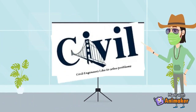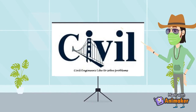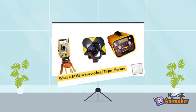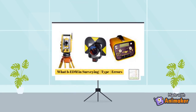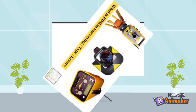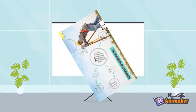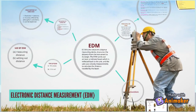Hey everyone, it's me Shiva and welcome to my channel Civil Problem Nepal. Today we will discuss about another instrument used in surveying: Electronic Distance Measurement. Electronic Distance Meter is surveying equipment used for measuring the distance between two points. It is also known as electromagnetic distance measurement, and the measurement is done by using electronic methods.